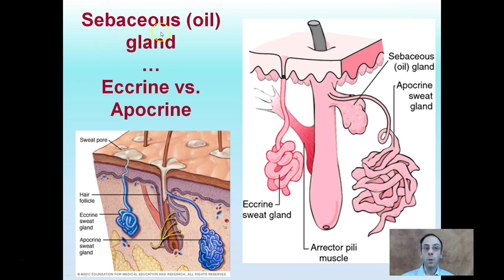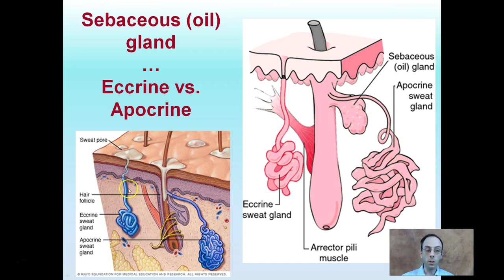For a final comparison: sebaceous or oil glands versus apocrine and eccrine glands. Looking at the images, some glands are separate from the hair follicle while others are associated with it. The eccrine glands shown in blue are independent of the hair follicle, while apocrine glands are associated with the hair follicle — as are the sebaceous oil glands. This association with or independence from the hair follicle is great for identification and can help you remember where each gland type may or may not be found within the body.